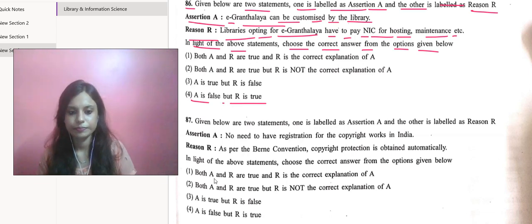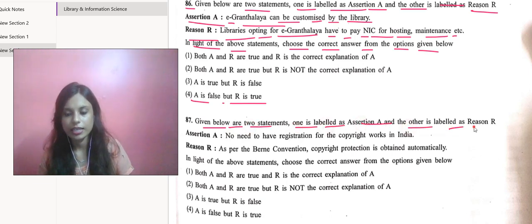Moving to the next question. Given below are two statements - one labeled as Assertion A and the other as Reason R. Assertion A: no need to have registration for copyright works in India. Reason R: as per the Berne Convention, copyright protection is obtained automatically.